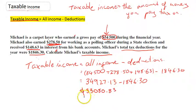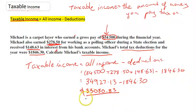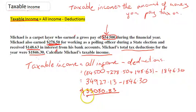So this is Michael's taxable income. In some future videos we'll look at how much tax he actually has to pay. But for now, this is his taxable income. This is the amount of money that the government looks at when it's time to decide how much tax he should pay.